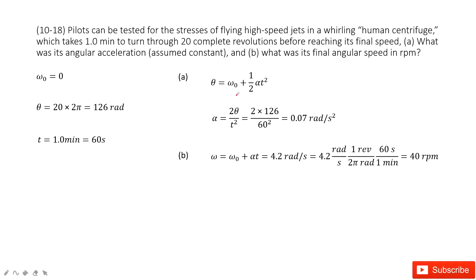At this one, you can see the initial angular velocity is zero, right? And then how much angle it covered? It covered 20 complete revolutions. So 20 complete revolutions, that's 2π radians for 1 revolution. So total angle it covered is 126 radians.